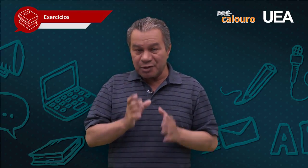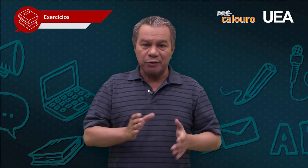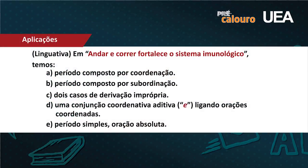Outro detalhe curioso: nessa sequência de três orações, como as duas primeiras fazem papel de sujeito, você está proibido de pensar em coordenação — é o famoso processo de subordinação. Com todas essas informações, as alternativas ficam fáceis. A letra A diz que é período composto por coordenação: não pode, porque se o sujeito é oracional, é subordinação. A letra B — período composto por subordinação — está vendo a facilidade? Escolhe a letra B e acerta.